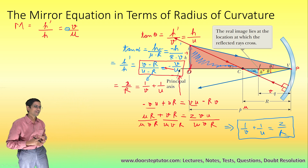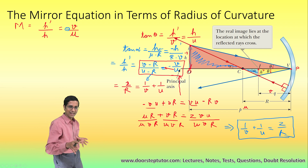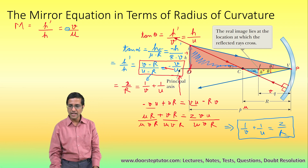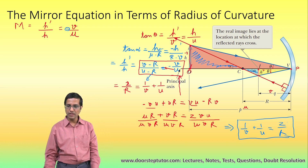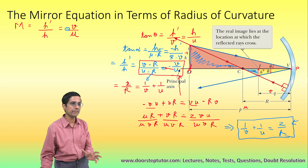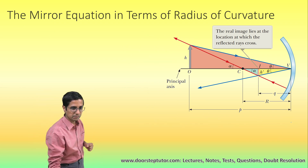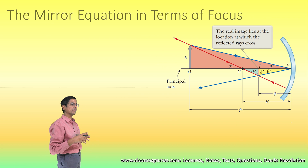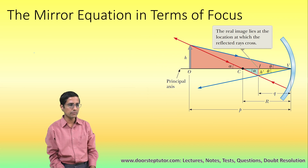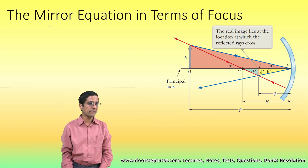This is the final mirror equation — most important — and it is expressed in terms of the radius of curvature R: 1 by V plus 1 by U equals 2 upon R. Now let us find the mirror equation in terms of focus, and in the process, we will define the focus itself.